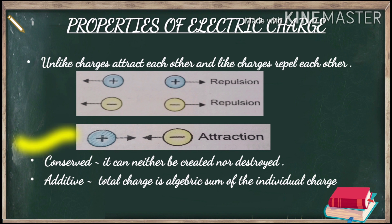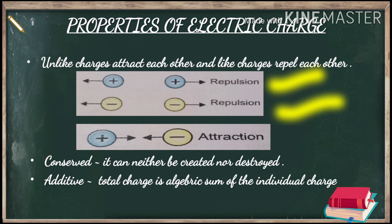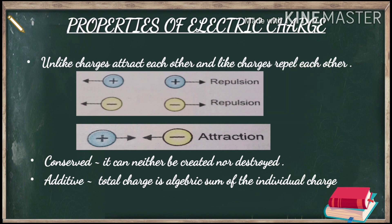Unlike charges — like plus and minus — attract each other, meaning they try to come close to each other. In the other case, if we have like charges — two positive charges or two negative charges — then they repel each other, meaning they go far away from each other. The second property is that charges are conserved in nature, meaning we can neither create nor destroy charge.